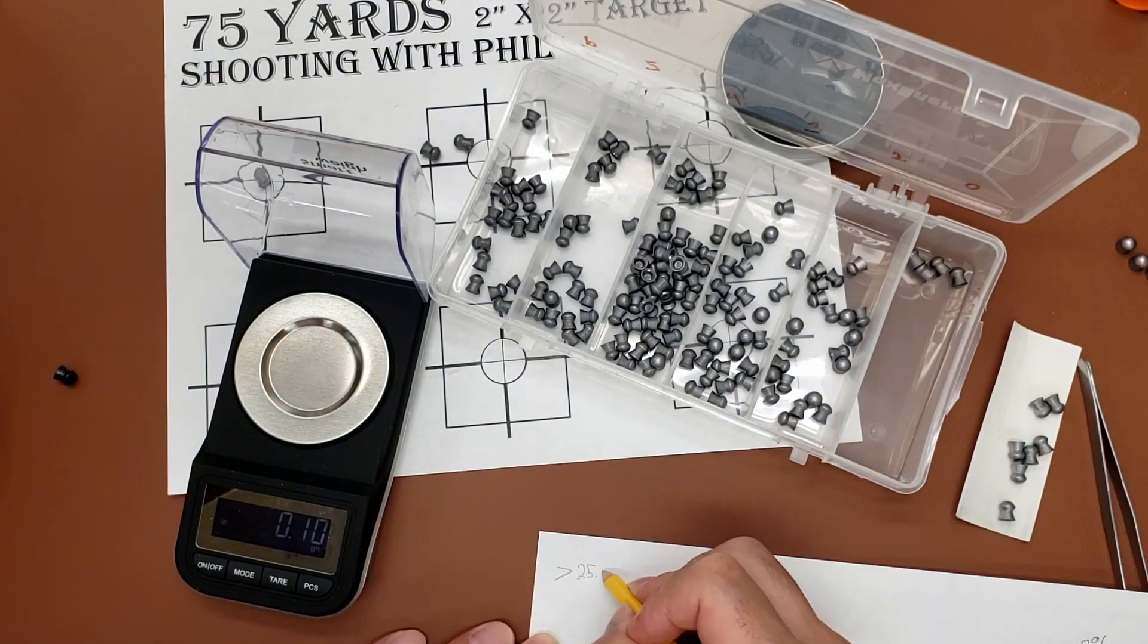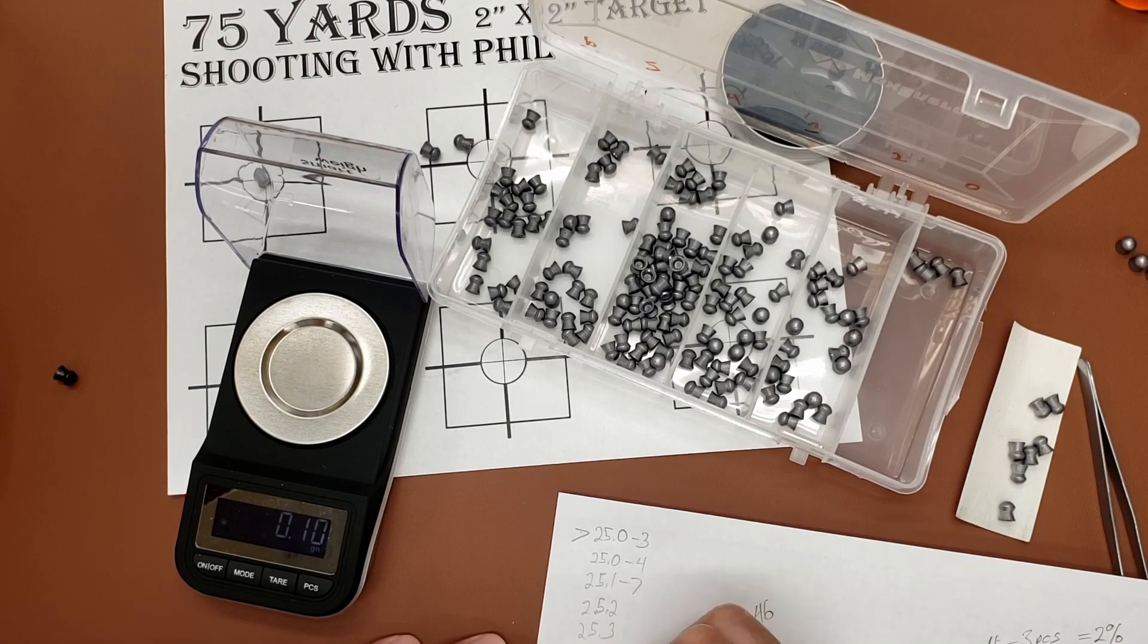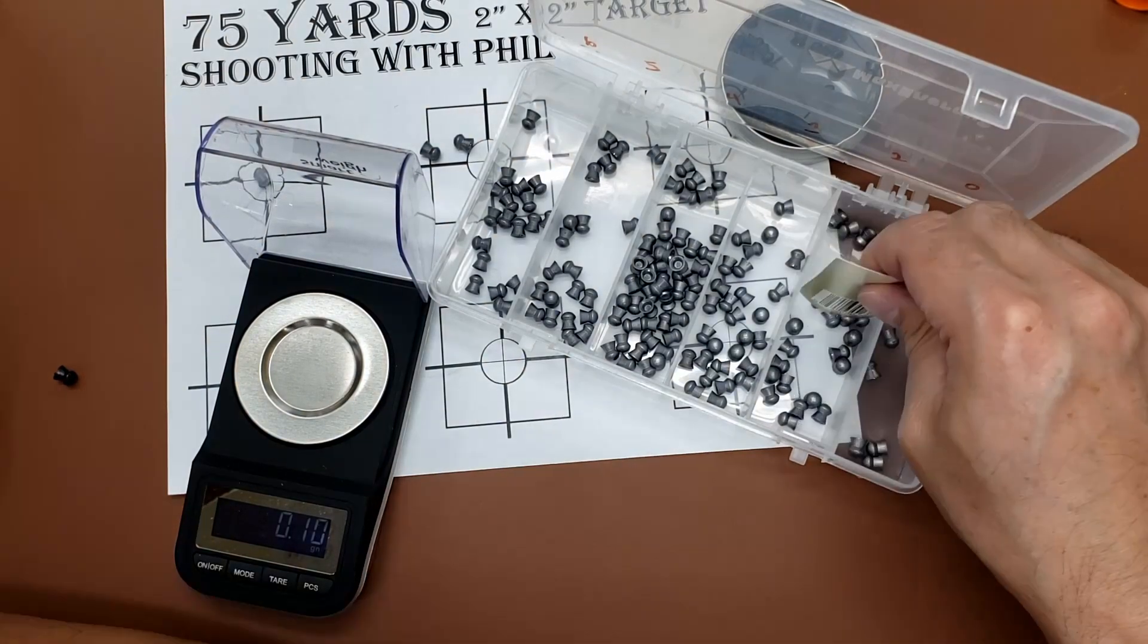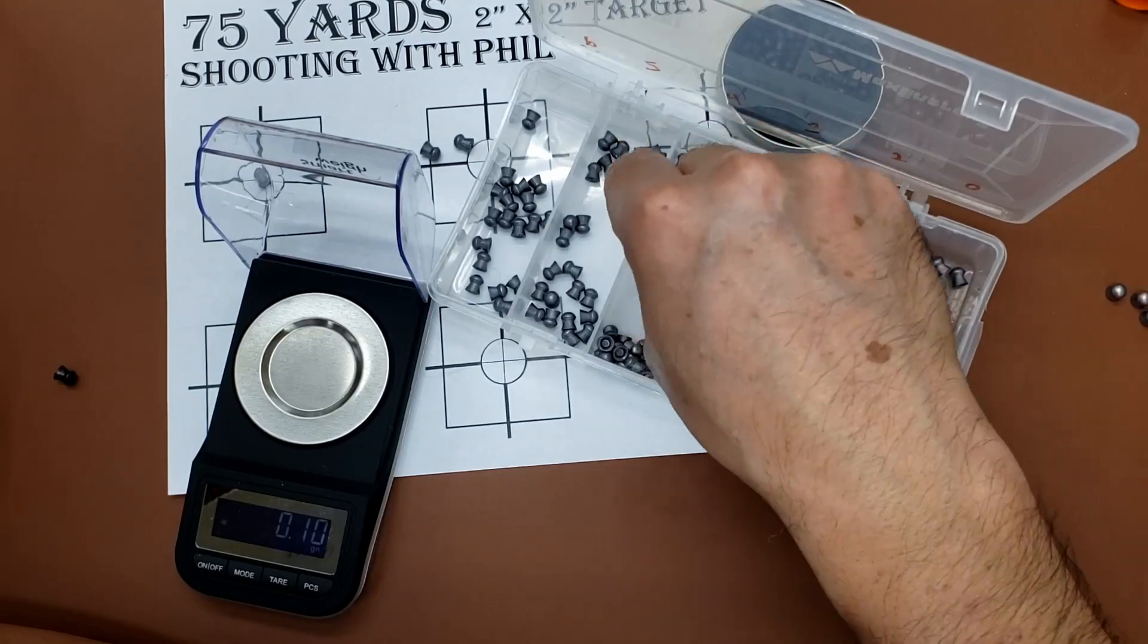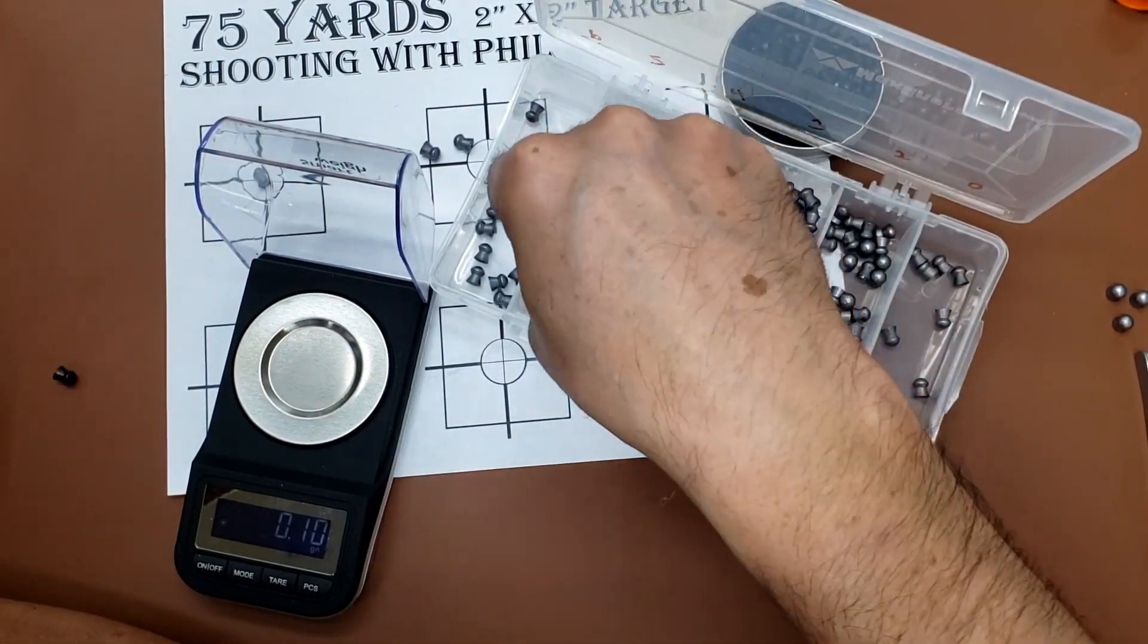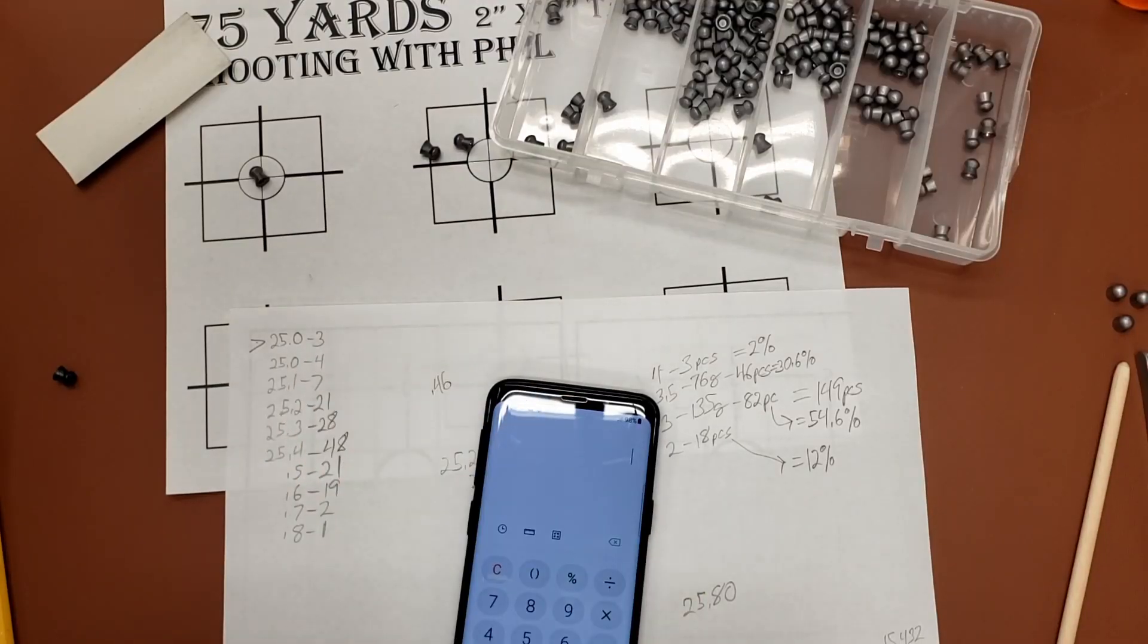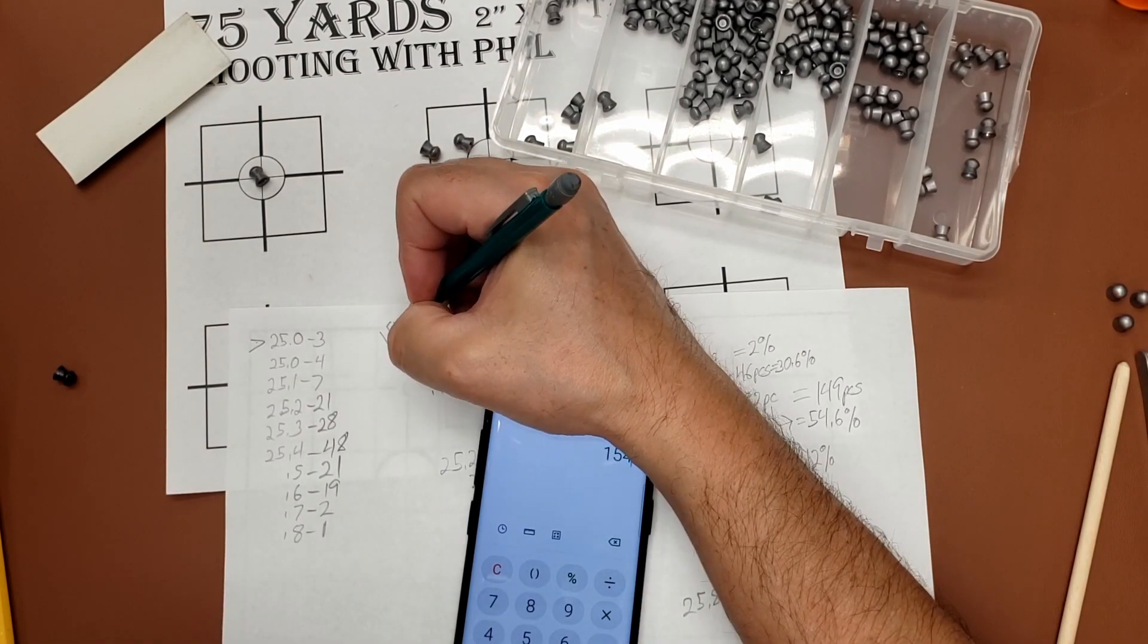All right, there we go. Let's count them up. All right, so total number of pellets: 154 total.